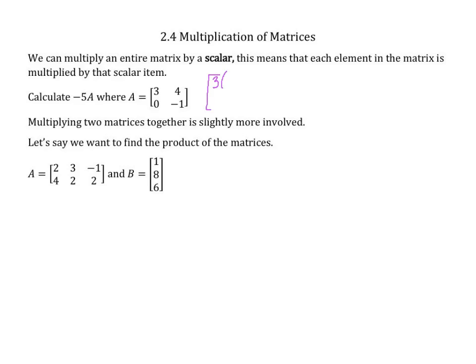So 3 times negative 5, 0 times negative 5, 4 times negative 5, negative 1 times negative 5. So that would be negative 15, negative 20, 0, and 5.